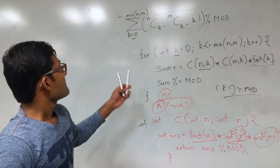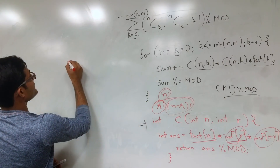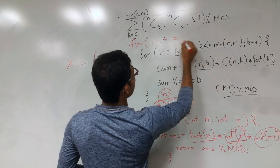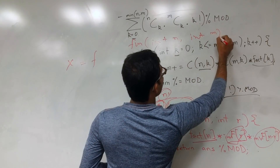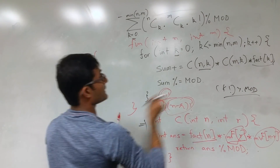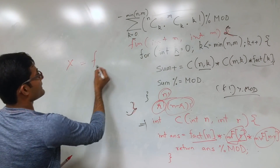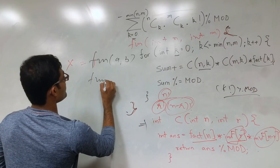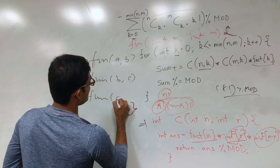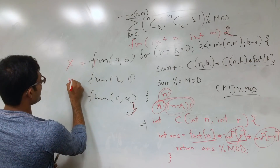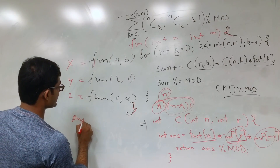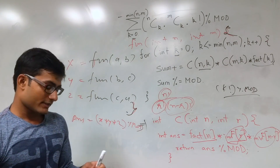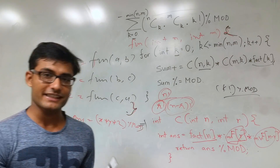To calculate the final answer, we call our two-group function for pairs (A,B), (B,C), and (C,A), storing results in X, Y, and Z respectively. As explained, the final answer is X × Y × Z, taking modulo at all steps. That's it — I hope you understand the logic and can solve the question. Good luck!